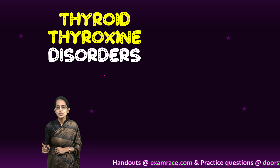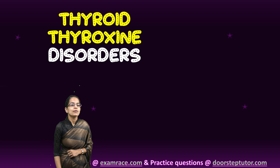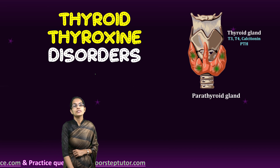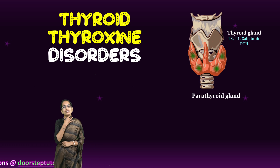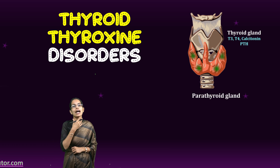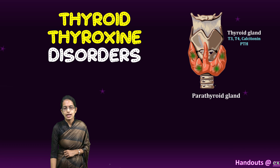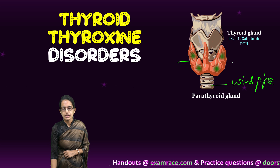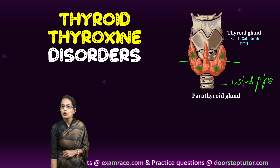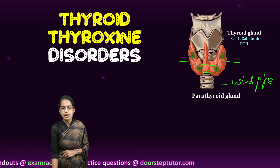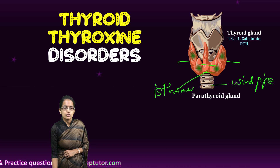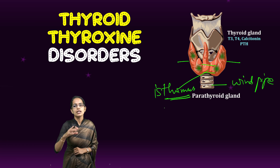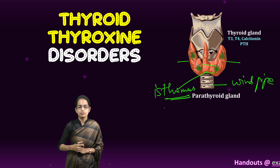The thyroid gland is one of the most important glands because it is the largest endocrine gland. It is present in the neck area on either side of the trachea or windpipe. As you can see, on either side of the windpipe there are two lobes — the lobes of the thyroid gland — connected by a belt known as the isthmus, similar to the isthmus concept in geography.